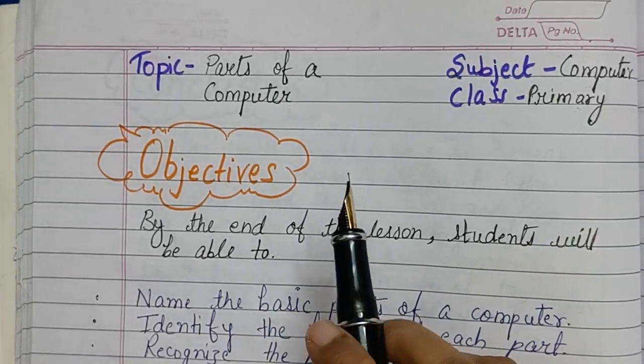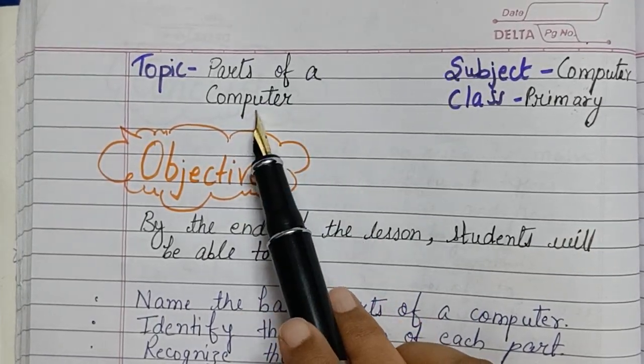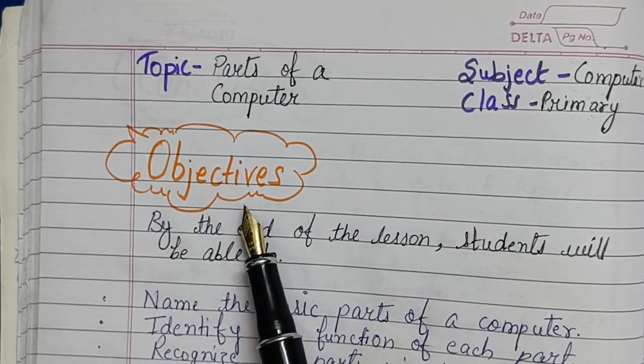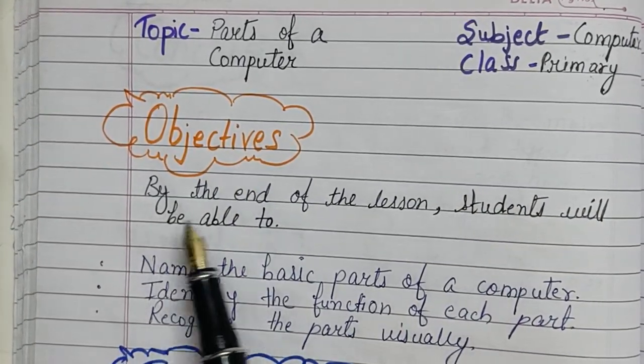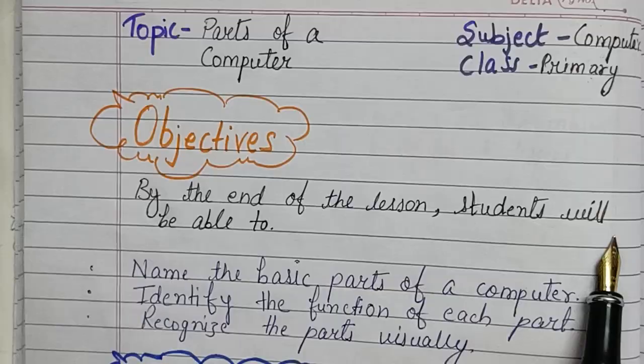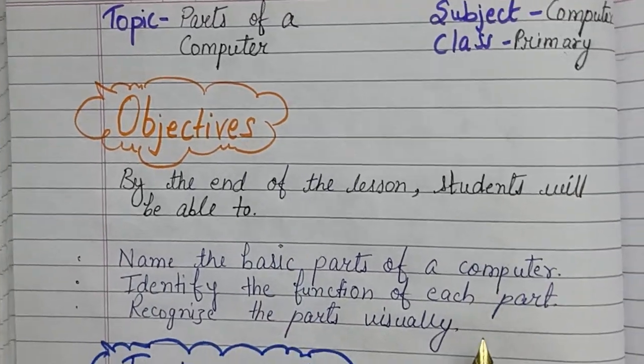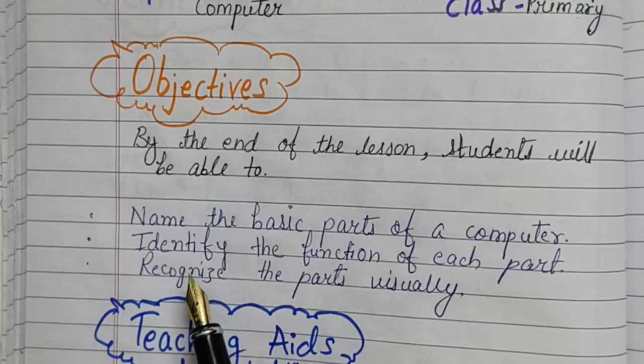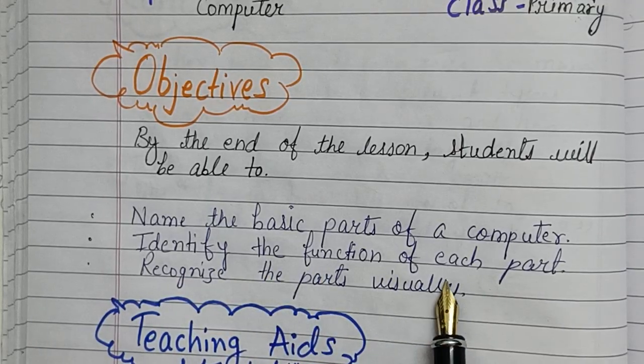Hello friends, today's lesson topic is parts of a computer. Subject: computer, class: primary first. Objectives: by the end of the lesson, students will be able to first, name the basic parts of a computer; second, identify the function of each part.